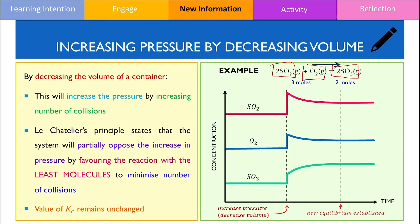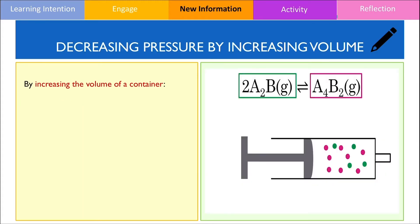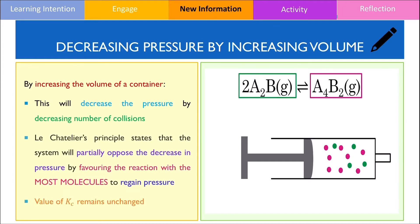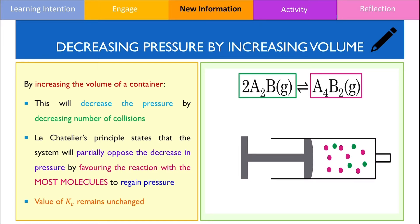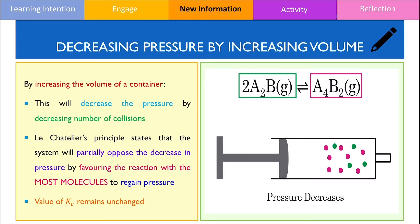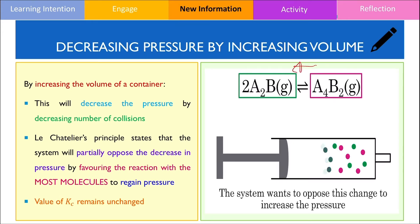Equilibrium is re-established when the concentration of each species then remains constant. Let's now look at an example where we are increasing the volume. If the volume of the container is increased, this will decrease the pressure because the number of collisions on the walls of the container has also decreased. In response to a reduction in pressure, the system will partially oppose by favouring the reaction that produces the most gas molecules to regain some of that pressure. In this example, there are more molecules on the reactants side, hence equilibrium will shift to the left favouring the formation of A₂B.